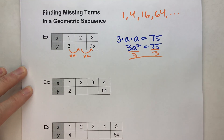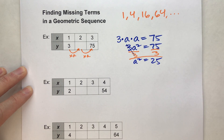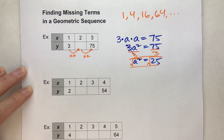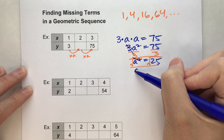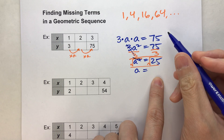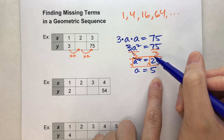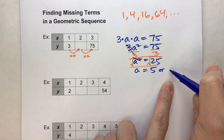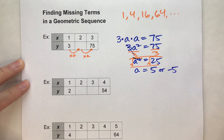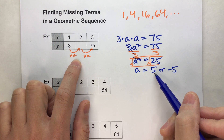Dividing both sides by 3, we get a squared equals 25. To undo a squared, we square root both sides. Be careful here — the square root of 25 could be two possible answers: positive 5, because 5 times 5 equals 25, or negative 5, because negative 5 times negative 5 also equals 25. So we are repeatedly multiplying by either 5 or negative 5.